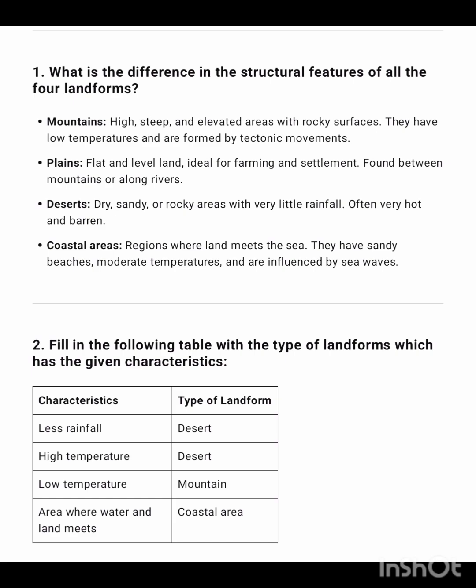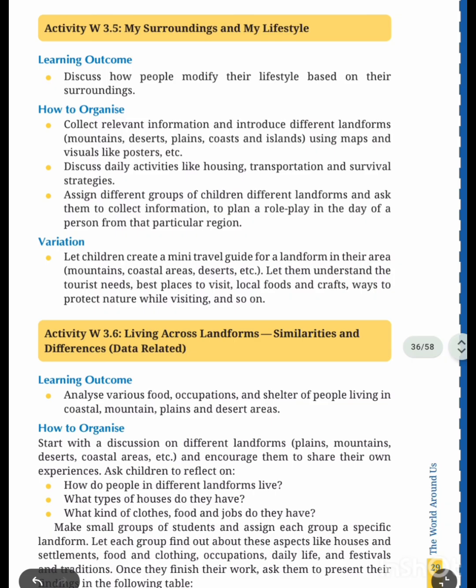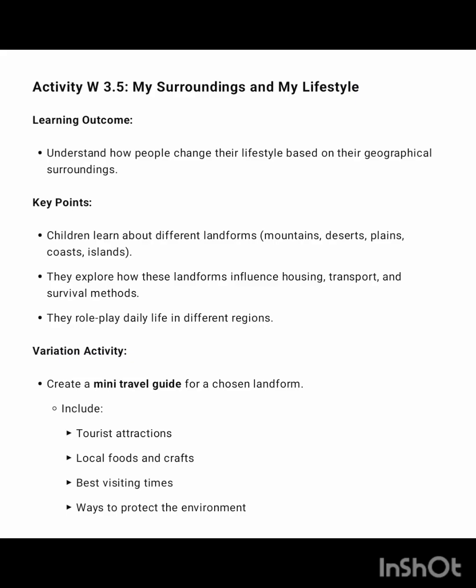By observing the picture you have to write the answer. In day three they gave two pictures — you have to name them. The first picture depicts a mountain area; the next one is a coastal area. Activity 3.5: my surroundings and my lifestyle — answer for this activity, learning outcomes, key points, and variation activities.